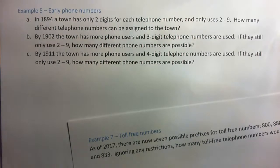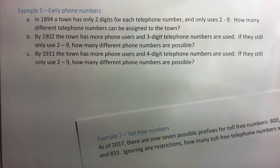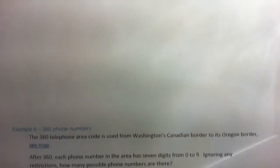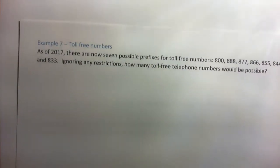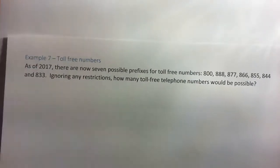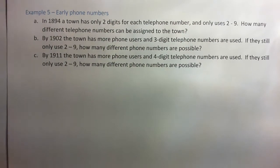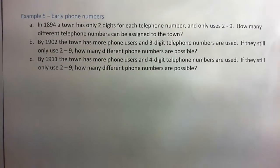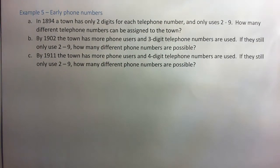In this video we are going to look at counting numbers of possible telephone numbers. We'll do example 5 with early phone numbers, example 6 with our 360 area code, and example 7 counting the number of possible toll-free numbers. So let's start with example 5: early phone numbers. In 1894, a town has only two digits for each telephone number and only uses the digits 2 through 9. How many different telephone numbers can be assigned to the town?